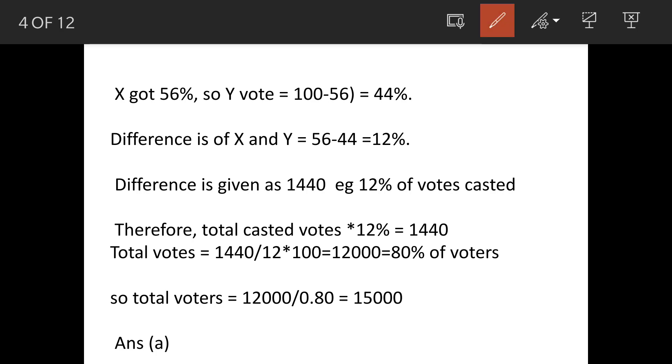Now X gets 56%, so Y's vote will be - let's say 100% was the total vote - so 100 minus 56 equals 44%. Those are Y's votes. The difference between X and Y is 56 minus 44, which equals 12%.